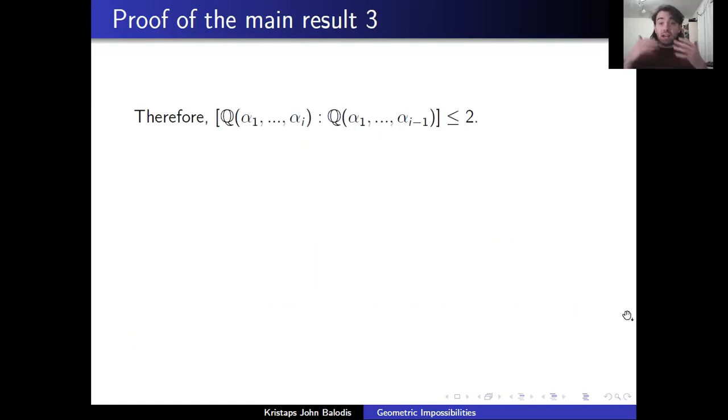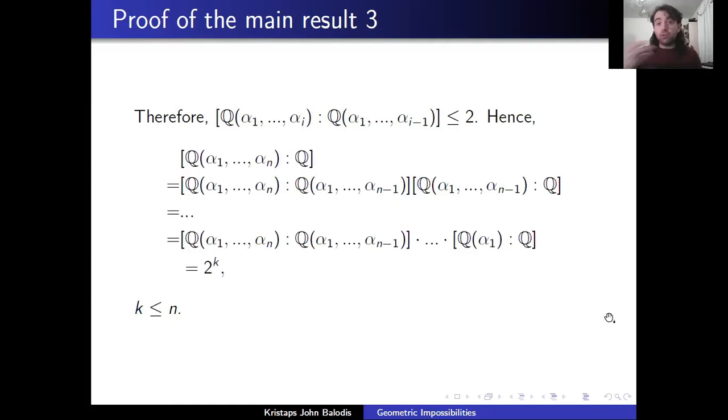Okay, so we've shown basically that actually, never mind just adding this αₙ, at each step of the process, if we construct some number, either that number was already in the field, like the intersection of two lines, or that number is at most a degree two extension. So if we continuously apply this theorem we had from the previous video that says that extensions of fields, successive extensions multiply together to give us the total extension, then this says that Q adjoin α₁ up to αₙ, this is really our F adjoin the αₙ over Q, keep applying that again and again for each individual α.